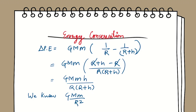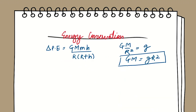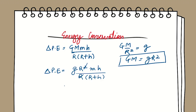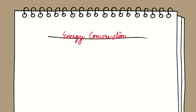We know that gravitational force GM m/r² = mg, so GM = gR². Substituting this into our ΔPE expression, we replace GM with gR², giving ΔPE = gR²mh / [r(r + h)]. Cancelling one r, this becomes mgh / (1 + h/r). This is equation 3 for the increase in potential energy.